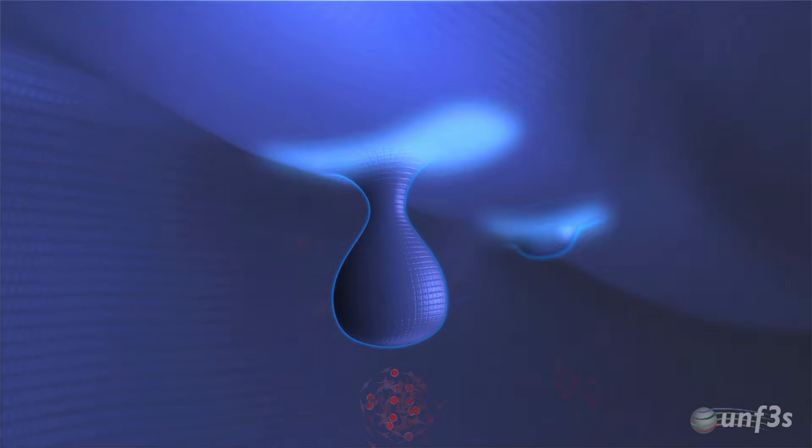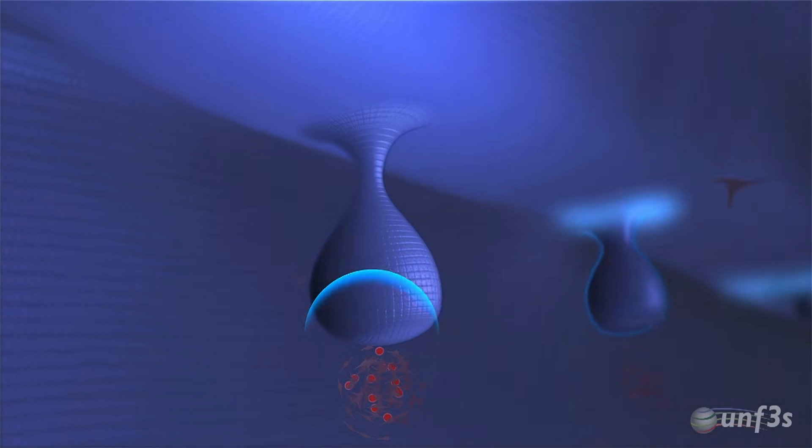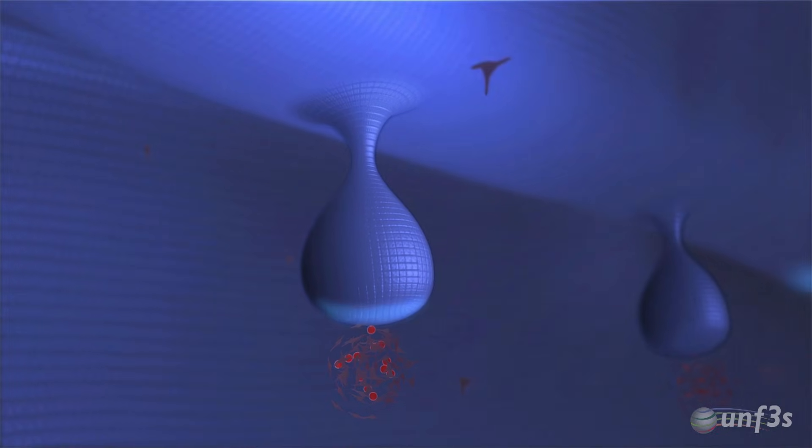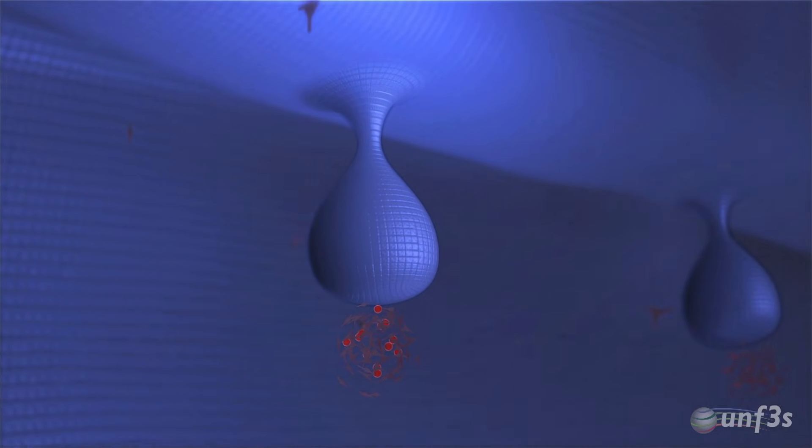For this to happen, dental placodes will appear, inducing the formation of dental buds. The ectomesenchyme then sends signals that trigger localized cell proliferation. The bud thus turns into a dental cap.